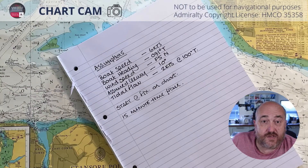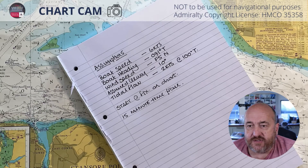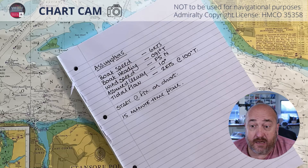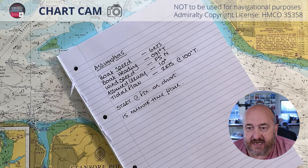So let's first of all look at the assumptions that we're making. We're looking at a boat speed of 6 knots. Our heading — our compass heading — has been adjusted already to 041 true.